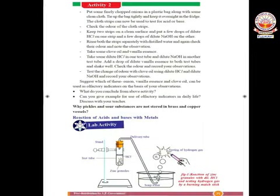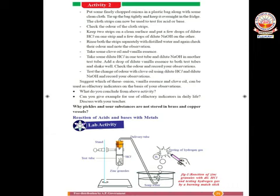Let us see the second type of chemical reaction — the reaction of acids with carbonates and metal hydrogen carbonates. First reaction: sodium carbonate reacts with hydrochloric acid to form sodium chloride, water, and carbon dioxide. Second reaction: sodium bicarbonate reacts with hydrochloric acid to form sodium chloride, water, and carbon dioxide.